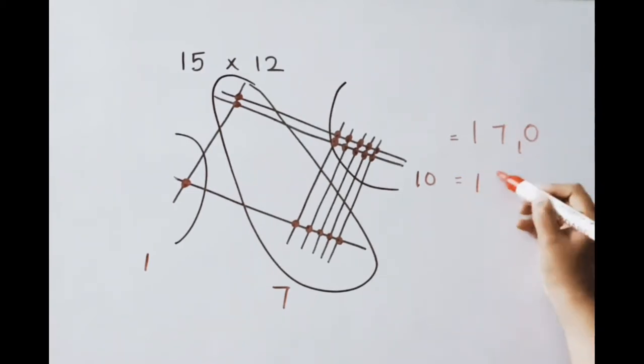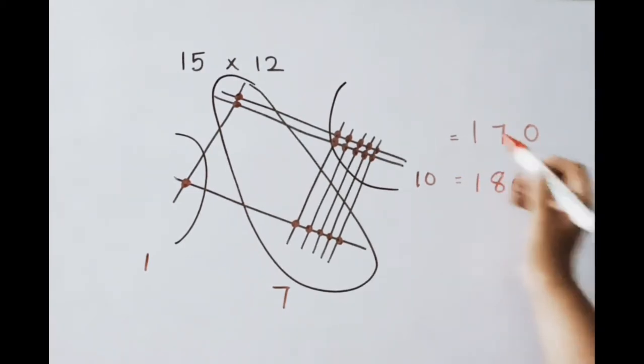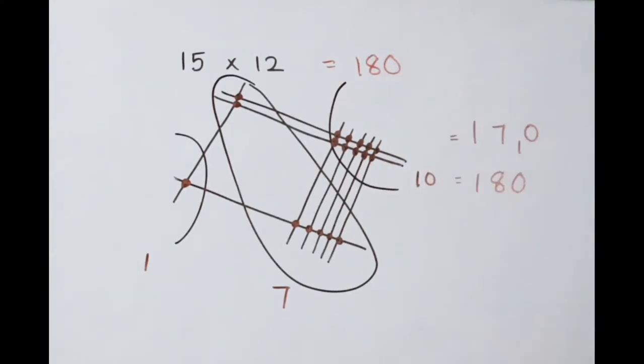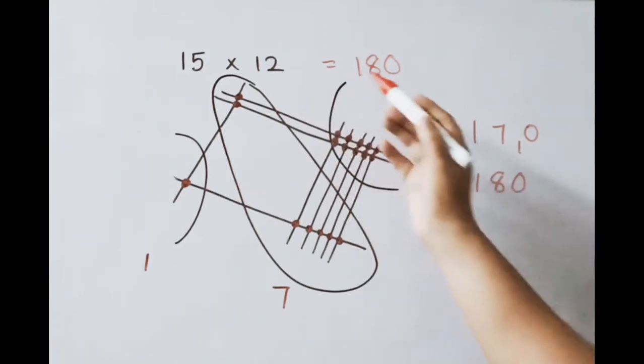So 1, 7 plus 1, 8, 0. So 15 into 12 answer is 180. Like this we can multiply any two digit number easily.